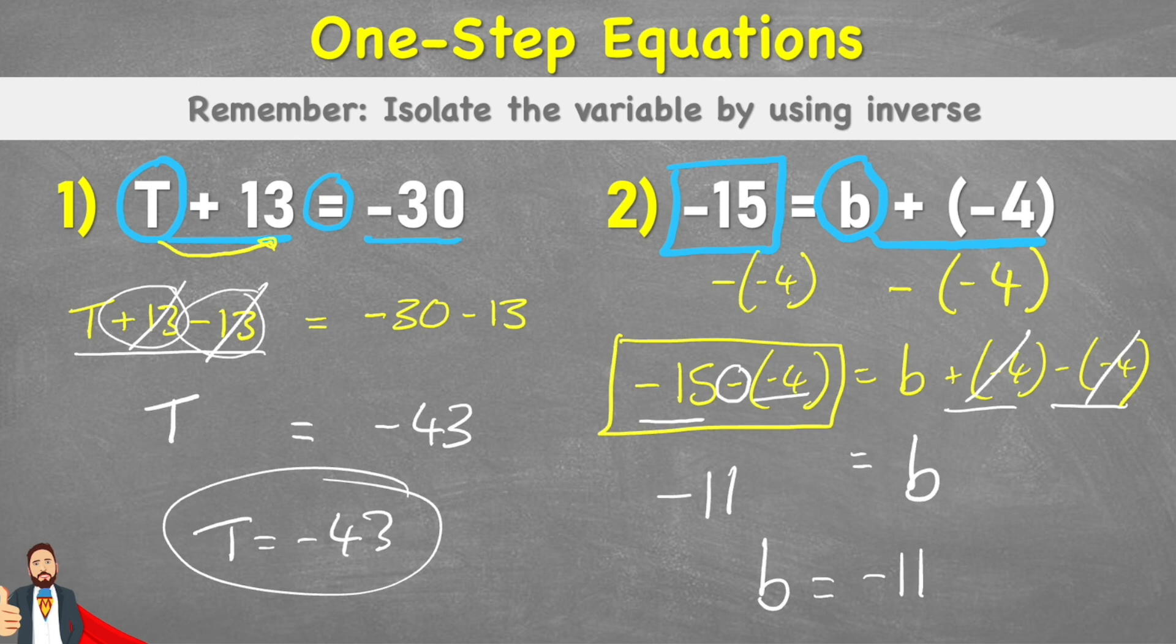Our first job was we're going to try and isolate this variable. So in the first case, we can look at this T, and we're trying to isolate it away from this plus 13. How do we do that? Well, we must insert a negative 13. But whatever we do to one side, we must therefore do to the other, and then we can just solve to find the variable value. And there you go.